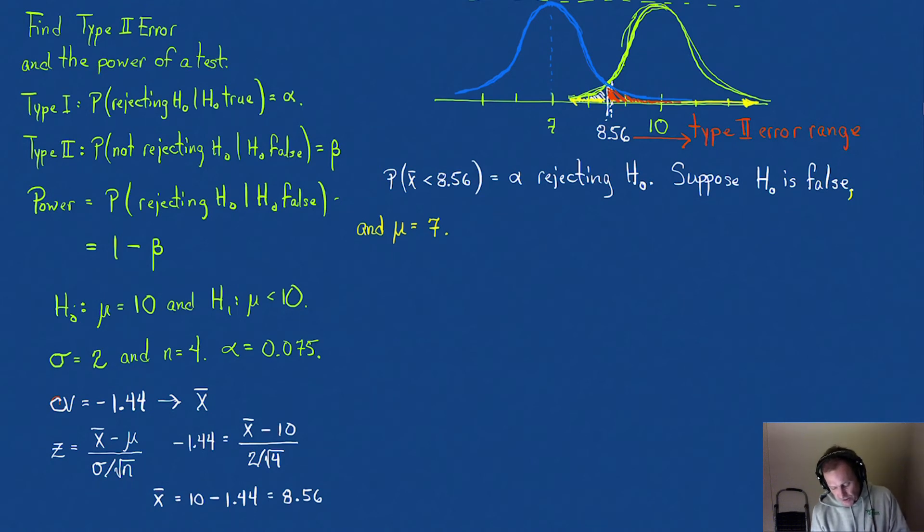So the probability of a Type 2 error in reality is fairly small, but let's calculate it. That Type 2 error, the probability, is actually this red area based off the blue curve. First thing we need to do is find our z-score.